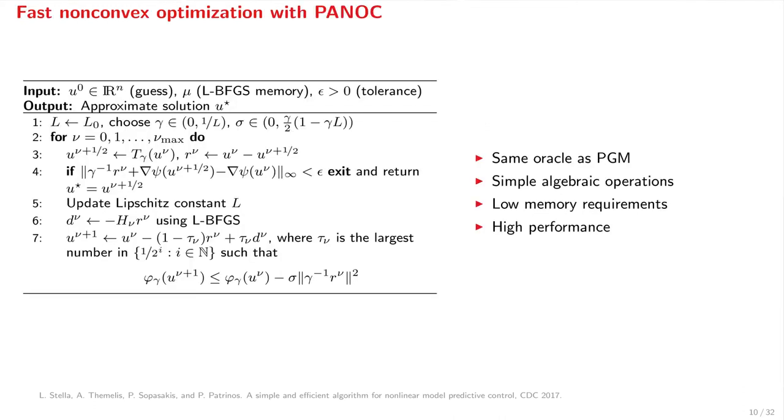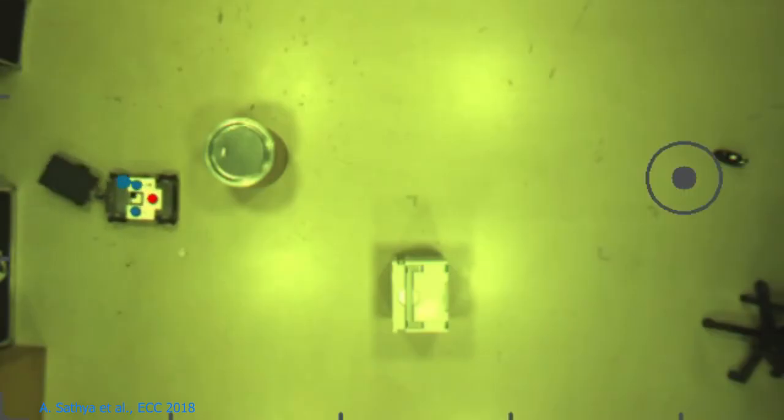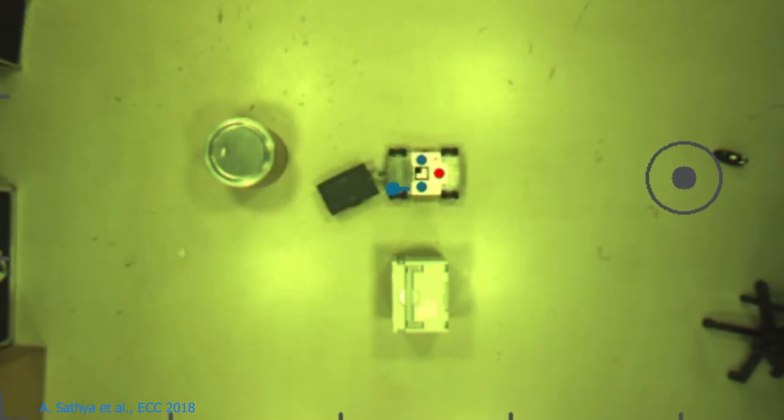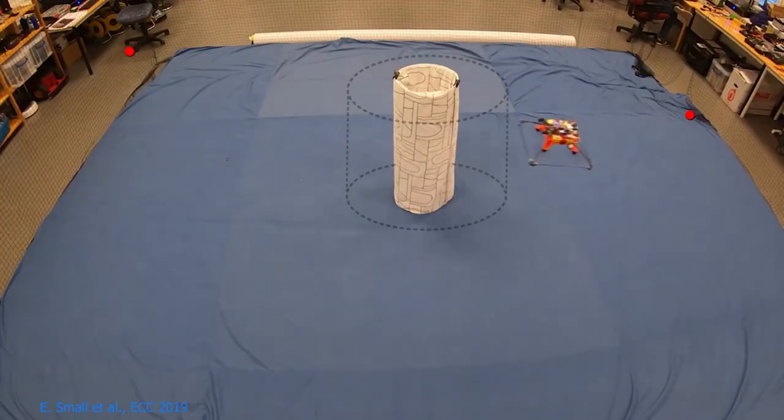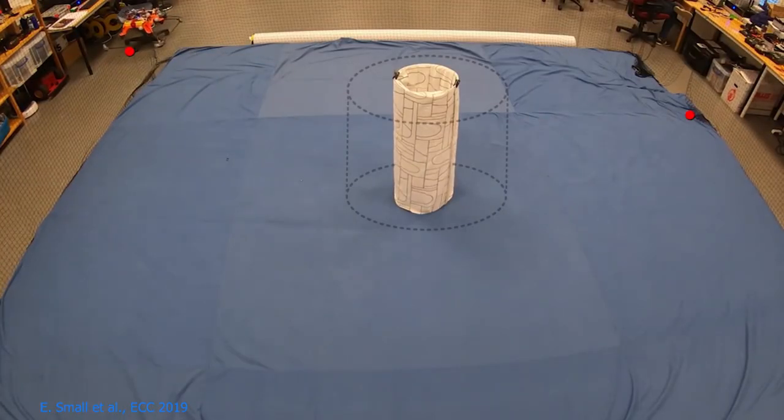The forward-backward envelope can be computed using the same oracle as the projected gradient method. This leads to PANOC, the proximal average Newton-type method for optimal control. PANOC requires the same oracle as the projected gradient method. It involves only simple algebraic operations. It has low memory requirements. And it is very fast. In all aspects, it is ideal for embedded applications. PANOC has been shown to perform very well on an autonomous ground vehicle and an autonomous quadcopter in obstructed environments.